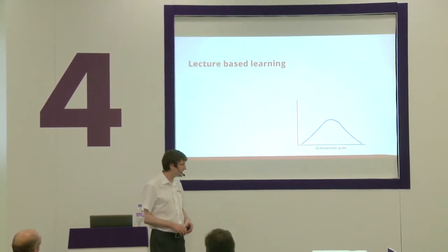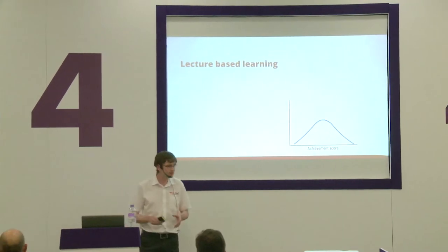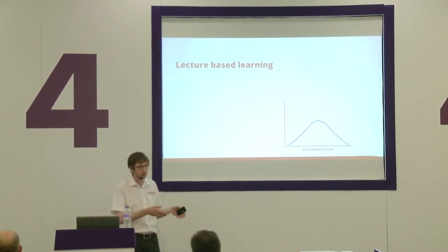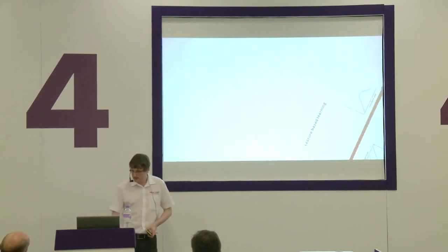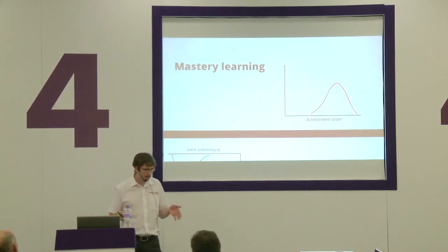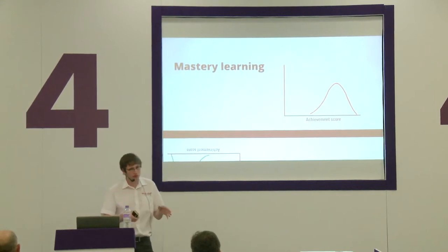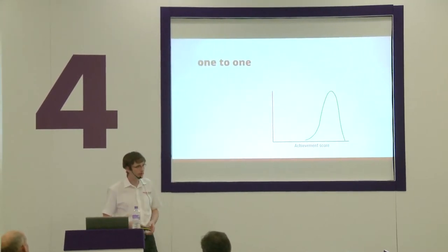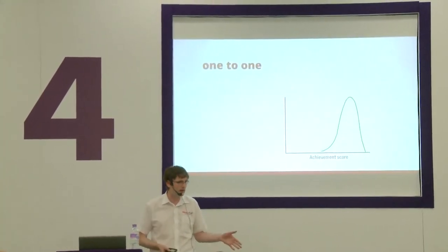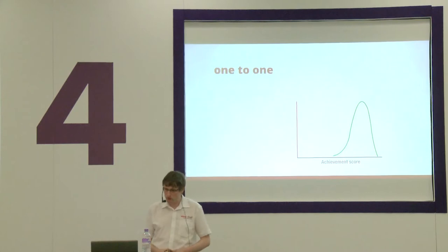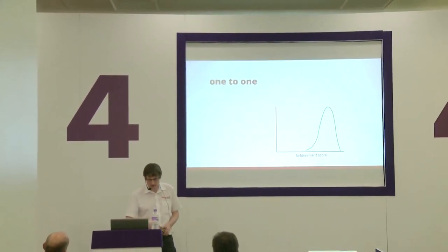What Benjamin Bloom was saying is that in a lecture-based environment, the bulk of achievement will be in the middle of the graph — around about 50% — with some high achievers and some low achievers. The mastery approach he came up with was to let students master one chunk of training before they move on to the next subject. And if we offer one-to-one tuition in that lecture environment with a mastery approach, the achievement score goes quite high. So what we want to do is push towards that green line.